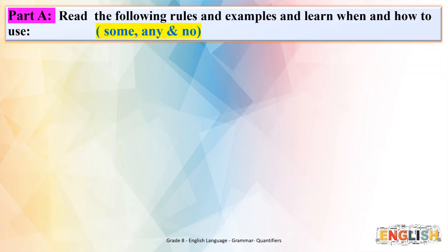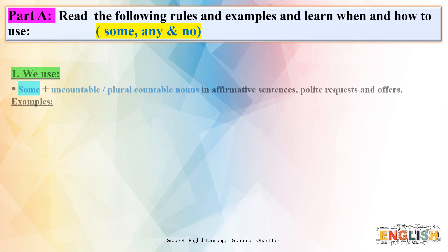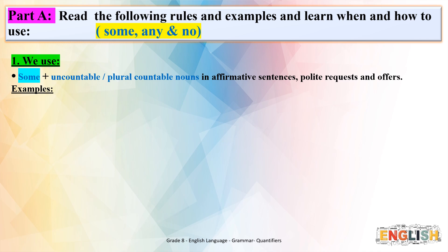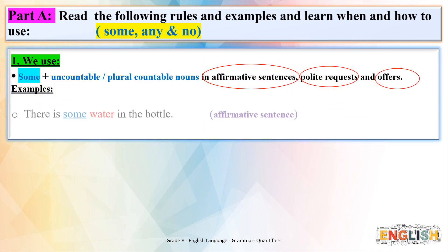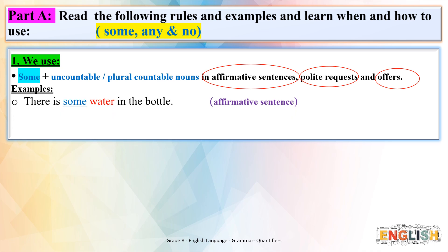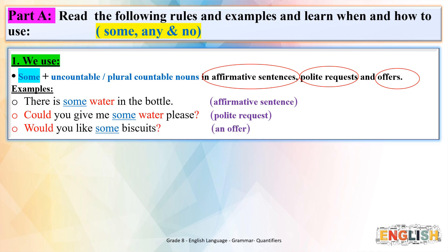Part A. Read the following rules and examples and learn when and how to use some, any, and no. Rule 1: We use 'some' plus uncountable or plural countable nouns in affirmative sentences, polite requests, and offers. Examples: 'There is some water in the bottle' (affirmative). 'Could you give me some water, please?' (polite request). 'Would you like some biscuits?' (offer).